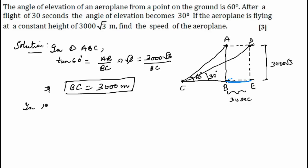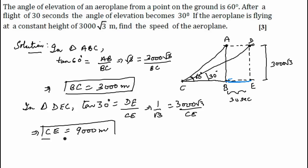In triangle DCE, tan 30 degrees equals DE upon CE. Tan 30 degrees is 1 by √3, DE is 3000√3, and CE is unknown. This implies CE equals, by cross multiplication, 9000 meters.